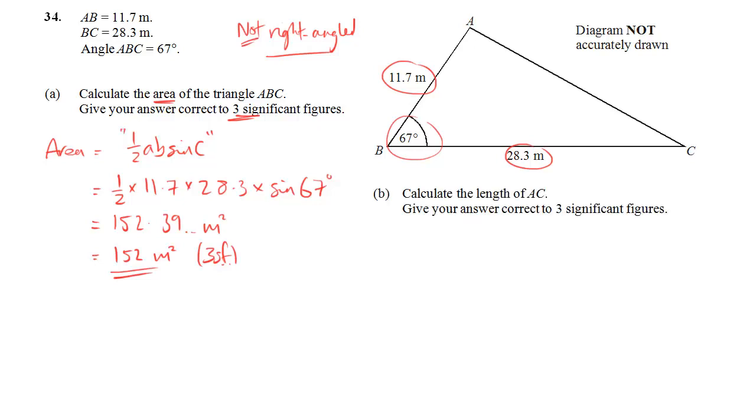Part B. Calculate the length of AC. Now we've got two sides. We want the third side, and we have the angle. You just need to get used to spotting what to do here. This is a case for the cosine rule, because the cosine rule involves three sides and an angle.